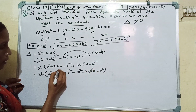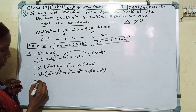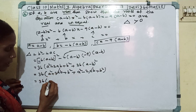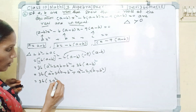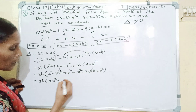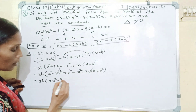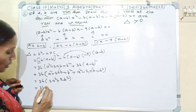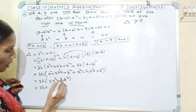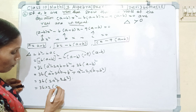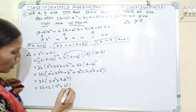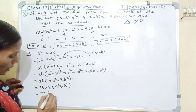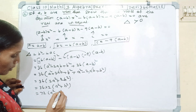The minus 2ab and plus 2ab cancel out. We get 36 into (a squared plus a squared plus b squared plus b squared), which is 36 into 2a squared plus 2b squared. Taking 36 into 2 as common gives 72(a squared plus b squared).